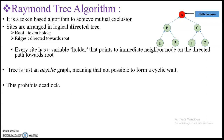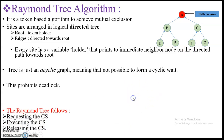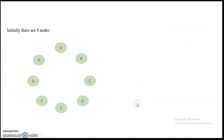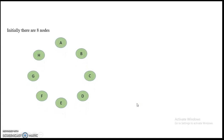The tree is an acyclic graph, meaning it is not possible to form a cyclic wait. By avoiding cyclic waits, deadlock will never happen in these types of systems. Raymond's Tree Algorithm follows three phases: requesting the critical section, executing the critical section, and finally releasing the critical section.